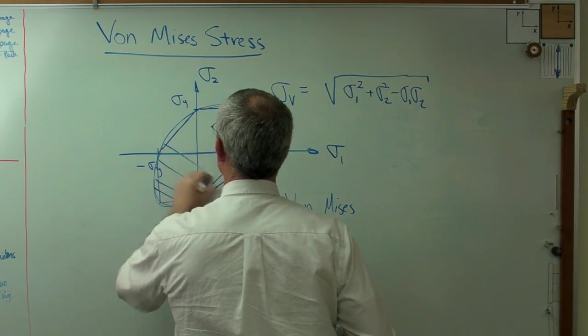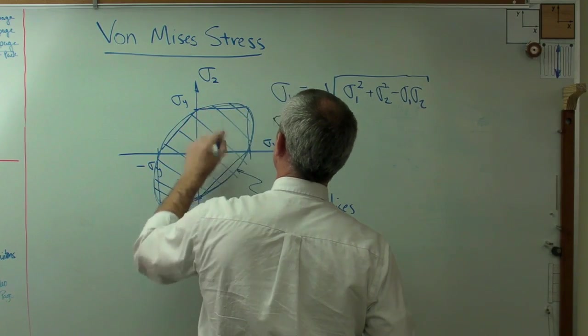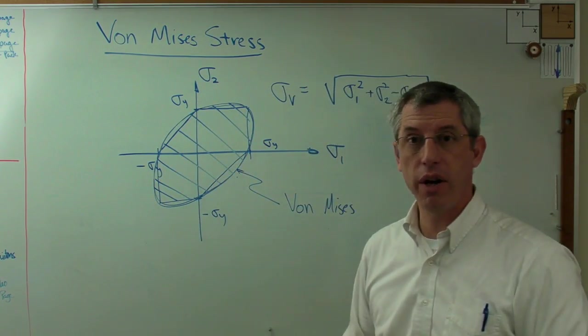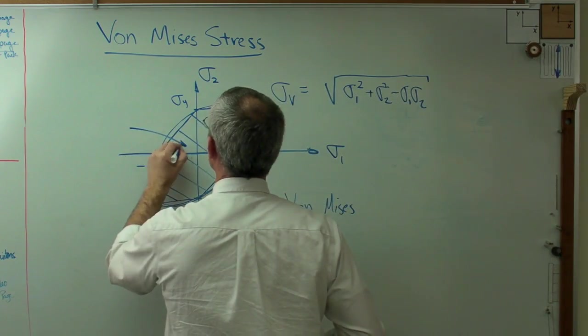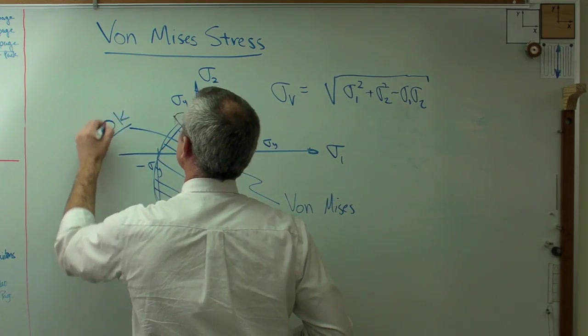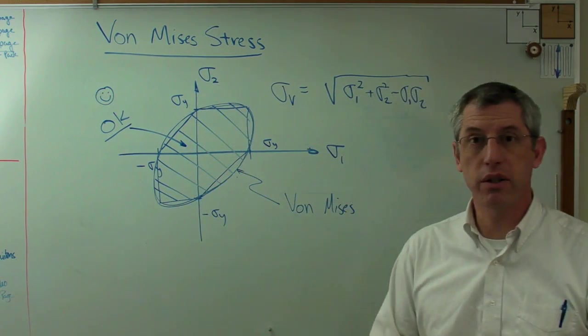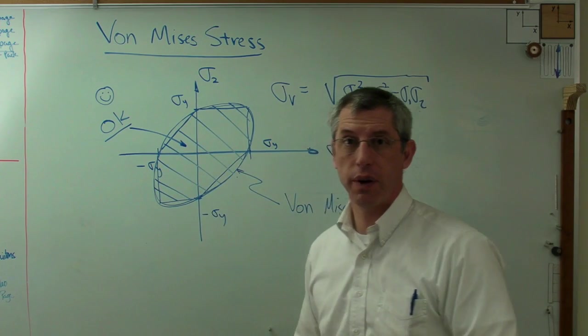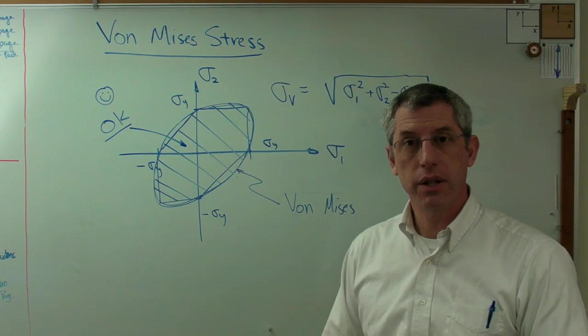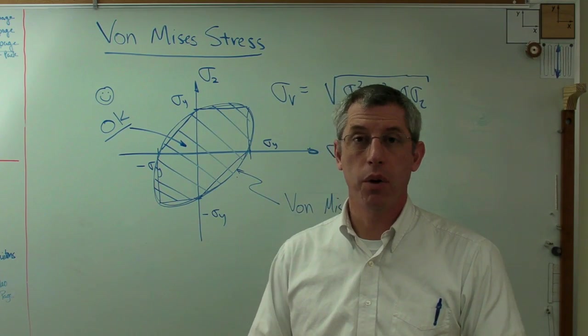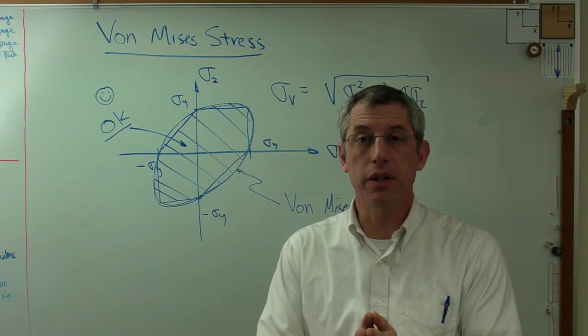Maybe I should even highlight this. If your point sigma 1, sigma 2 is inside that dashed area, you're good to go. So that's okay. So if your Mises stress lies inside that oval, you're fine. This is enough for now. I'm going to stop here. And in the next video, I'm going to work out a problem. I'll give you a little teaser here.